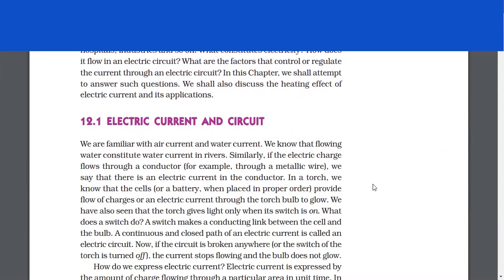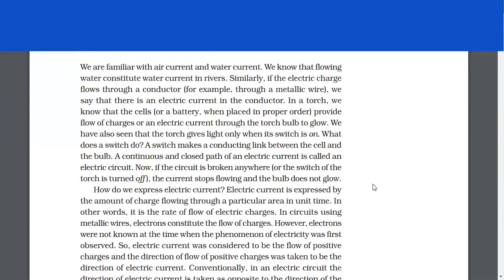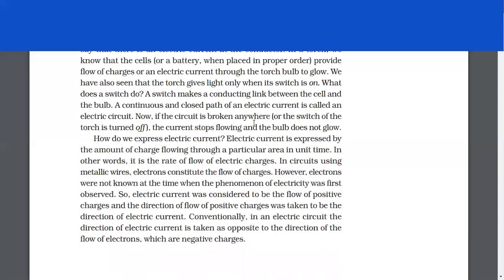Electric current and circuit. We are familiar with air current and water current. We know that flowing water constitutes water current in rivers. Similarly, if the electric charge flows through a conductor, for example through a metallic wire, we say that there is an electric current in the conductor. In a torch, the cells or a battery, when placed in proper order, provide flow of charges or an electric current through the torch bulb to glow. The torch gives light only when its switch is on. A switch makes a conducting link between the cell and the bulb. A continuous and closed path of an electric current is called an electric circuit. If the circuit is broken anywhere or the switch of the torch is turned off, the current stops flowing and the bulb does not glow.